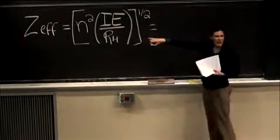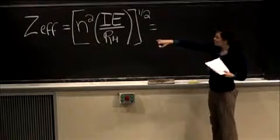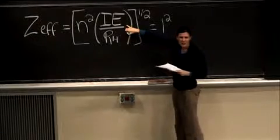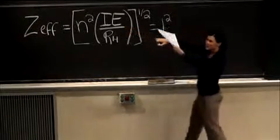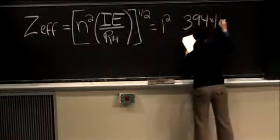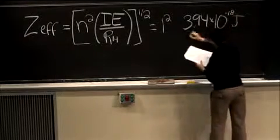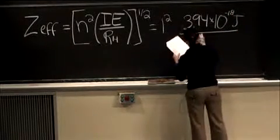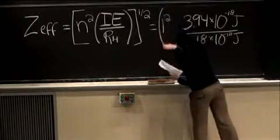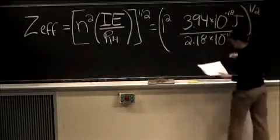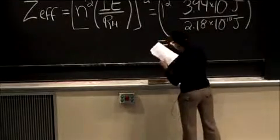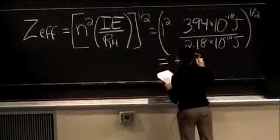So what's our value for N here? One, yep, that's right. And then what's our value for ionization energy? Yep, so it's just that ionization energy that we have experimentally measured, 3.94 times 10 to the negative 18 joules. We put all of this over the Rydberg constant, which is 2.18 times 10 to the negative 18 joules. And we want to raise this all to the one-half. So what we end up seeing is that the Z effective is equal to positive 1.34.